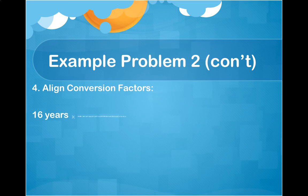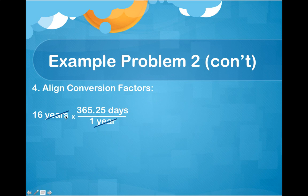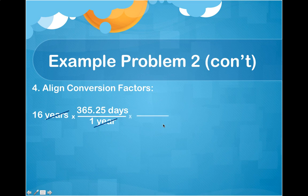First, we go from years to days. Since we're starting with years, years goes on the bottom and days goes on the top so that years will cancel — because they're dividing out. Now our answer is in days, but the problem asks for seconds, so we need another conversion. For every 1 day we have 24 hours. Days is on top so it has to go on the bottom of the next factor, and 24 hours goes on top. This way the days units cancel, leaving us with hours.